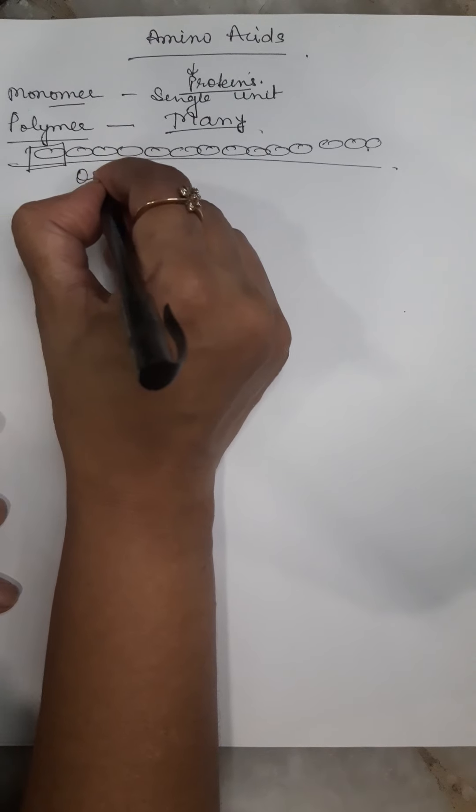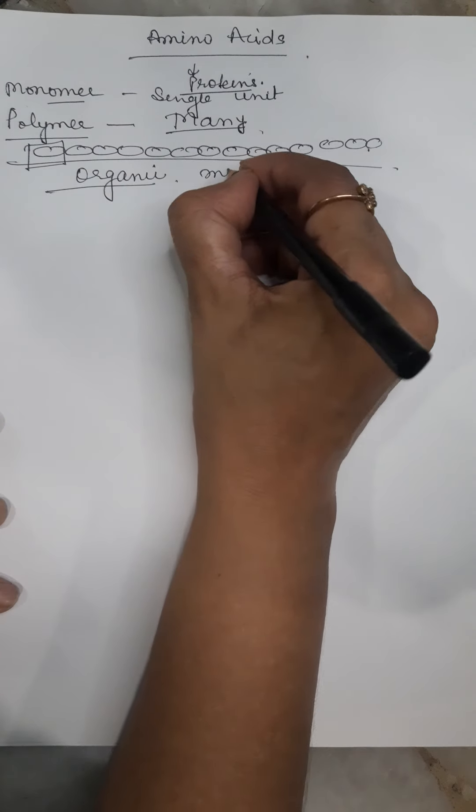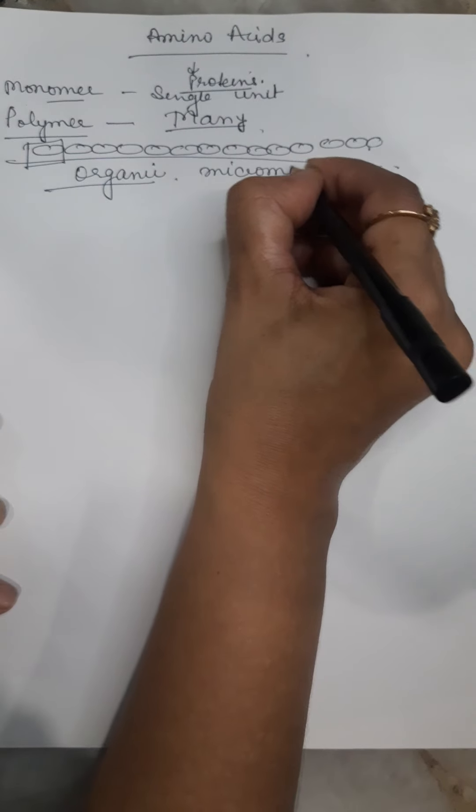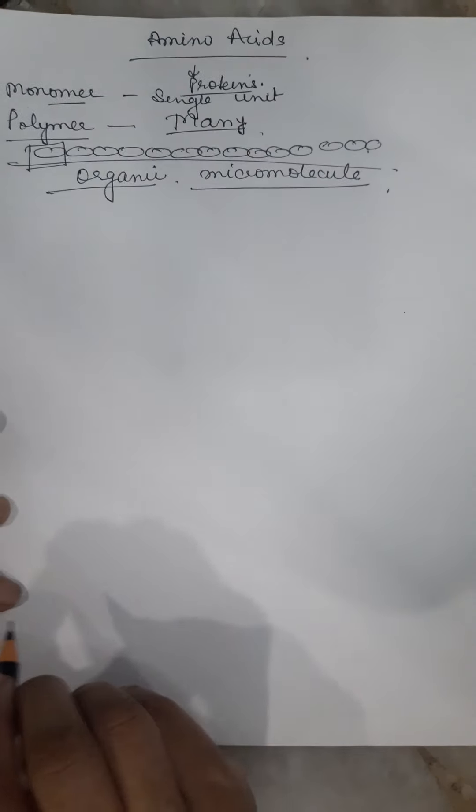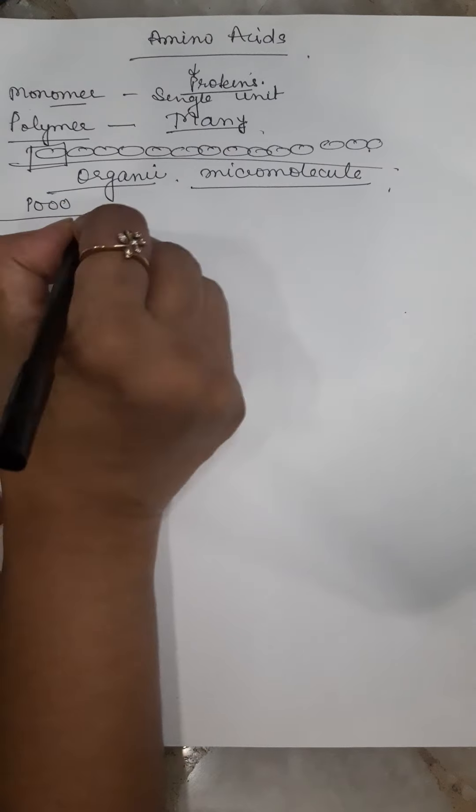Amino acids are organic micromolecules. Micromolecules are those molecules which have molecular weight less than 1000 Dalton.